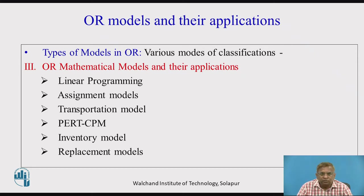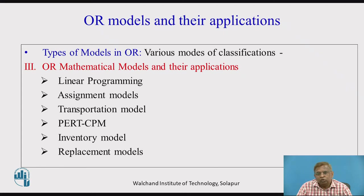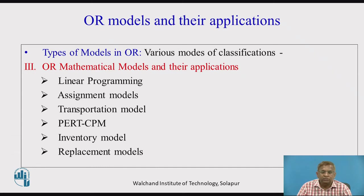The next model is assignment models. This is where you have, for example, five machines and five workers, and you must assign one worker to each machine. Or you have ten jobs and ten workers, and you decide which job should be given to which worker. You are trying to assign one thing to another — this comes under assignment problems or assignment models.